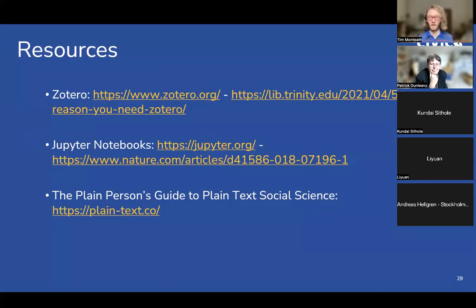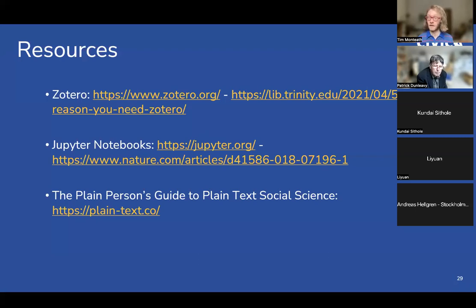Just a few resources for people to look at after our talk. Zotero as a reference manager is something I would really highly recommend to everyone. Jupyter notebooks are computational lab notebooks which are very good for anyone doing any kind of quantitative work and you can also use languages like R with them. Finally, 'A Plain Person's Guide to Plain Tech Social Science' is a book written by Professor of Sociology Kieran Healy, which I found personally very influential and helpful — though it does get quite technical quickly, pick out what works for you.